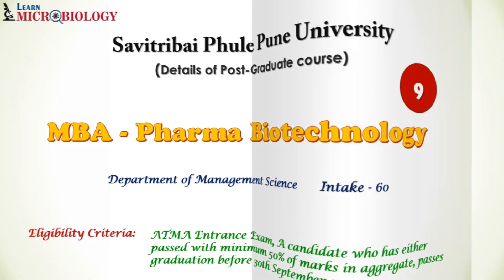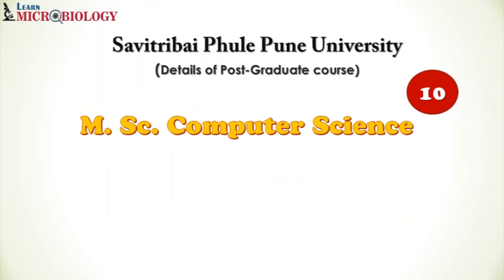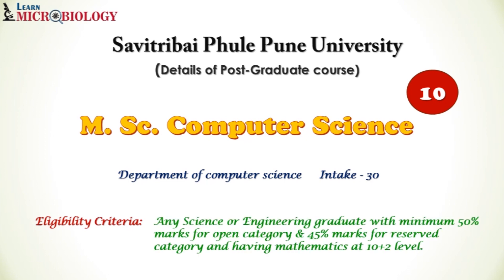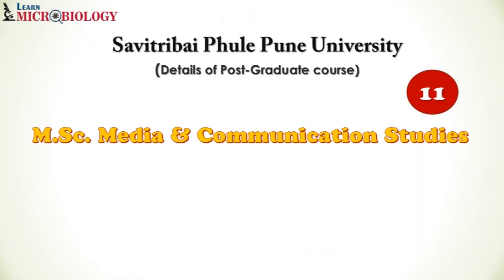Course number ten is MSc in Computer Science. If you want to shift your stream and learn about computer science, this course is offered by the Department of Computer Science with an intake capacity of 30 students. The eligibility criteria is any science or engineering graduate with minimum 50 percent marks for open category, or 45 percent for reserved category, in your bachelor's degree. Importantly, you should have done Mathematics at your 10+2 level, that is your HSC.